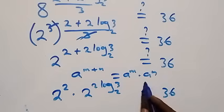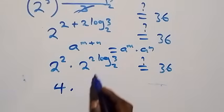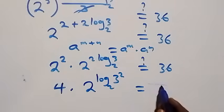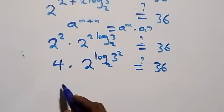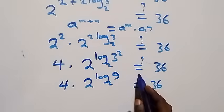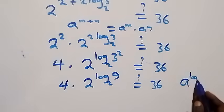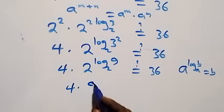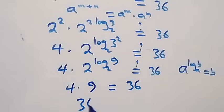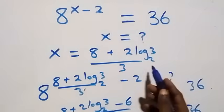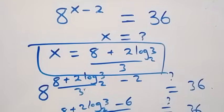This gives us 2 squared times 2 raised to power 2 log 3 base 2, equals 36. That is 4 times 2 raised to power log 3 squared base 2, equals 36. By the identity a raised to power log b base a equals b, we get 4 times 9 equals 36, which is indeed 36. The left answer equals the right answer, so we conclude that x equals 8 plus 2 log 3 base 2, all over 3, satisfies the given problem.